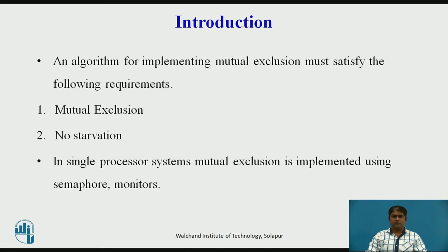An algorithm for implementing Mutual Exclusion must satisfy the following requirements. 1. Mutual Exclusion: Given a shared resource accessed by multiple concurrent processes, at any time only one process should access the resource. That is, a process that has been granted the resource must release it before it can be granted to another process. 2. No Starvation: If every process that is granted the resource eventually releases it, every request must be eventually granted.